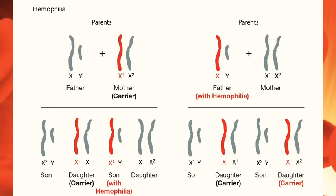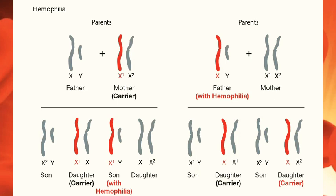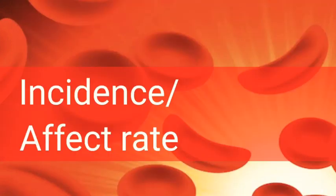A mother may be a carrier or normal but is almost never affected — she is affected only in rare cases. On the other hand, a father is either affected or normal but can never be a carrier, because males have only one X chromosome, as we already discussed.